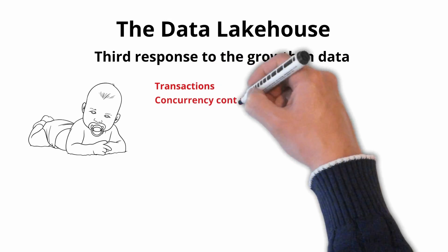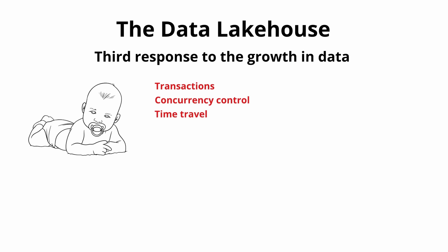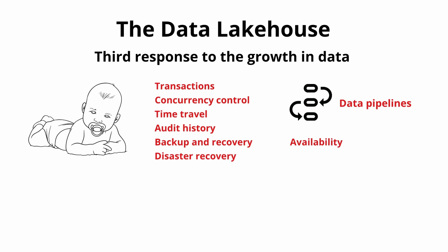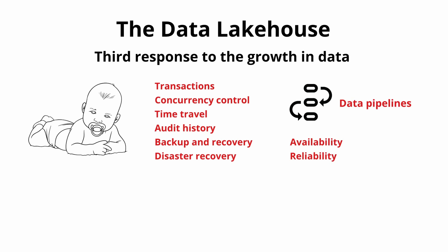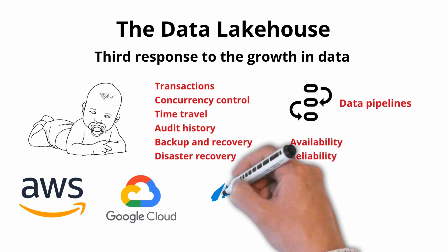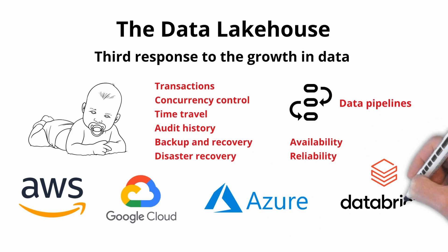A data lake house is enabled by new system designs that implement similar data structures and features to a data warehouse, such as transactions, asset properties, and indexes. It sits directly on top of low-cost cloud storage through open file formats such as Parquet. Data lake houses need to support features such as transactions, concurrency control, time travel, audit history, backup and recovery, and disaster recovery. They also need to monitor and troubleshoot data pipelines and workflows while ensuring availability and reliability of the platform. Leading data lake house vendors and technologies include AWS, Google Cloud, Microsoft Azure, Databricks, and Snowflake.